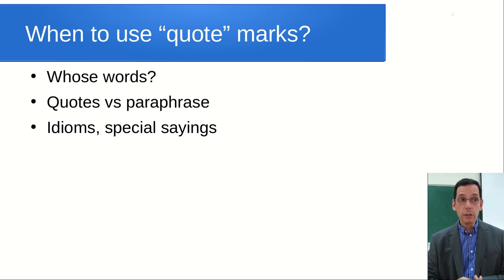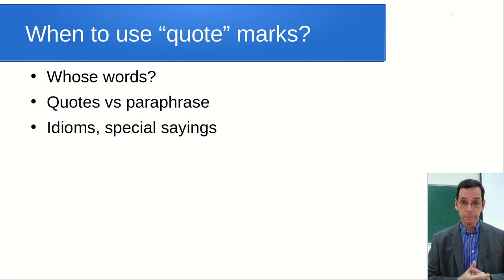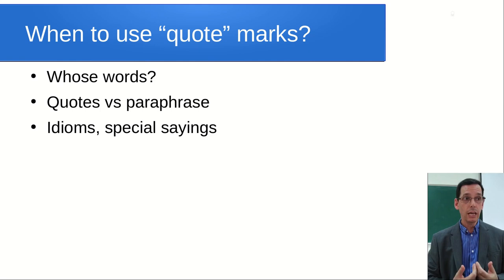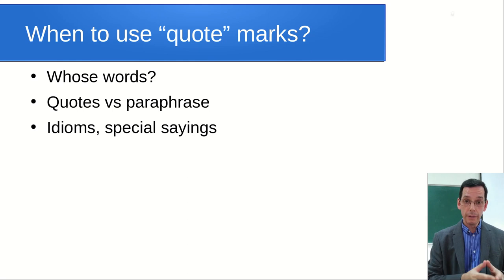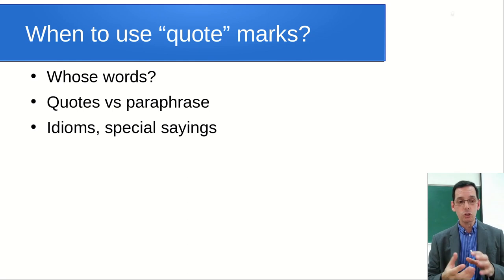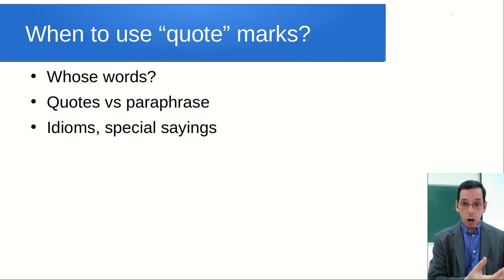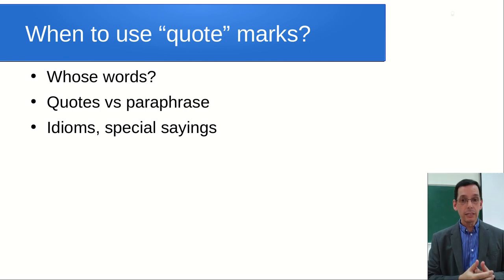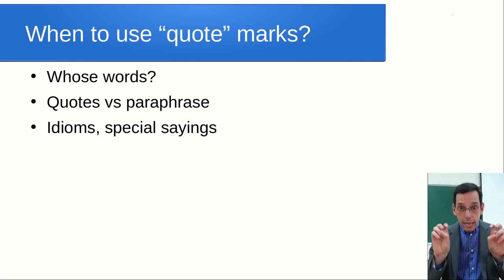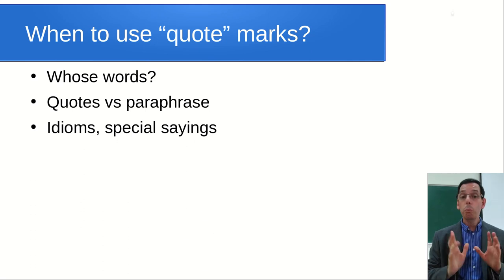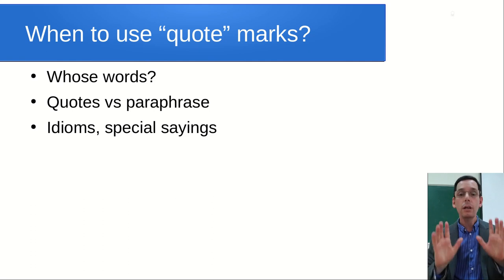There's a question about whether to use quotation marks or not. It comes down to this: whose words are you using? If you're using the exact words of the original author, put them in quotes. If you are paraphrasing, don't use quotes. Generally, paraphrasing is always better because you're trying to rephrase slightly for your audience and fit it into your story. The other time we use quotes is for idioms or special sayings - like 'the early bird catches the worm' - often without any citation because it's just a common, well-known quote.